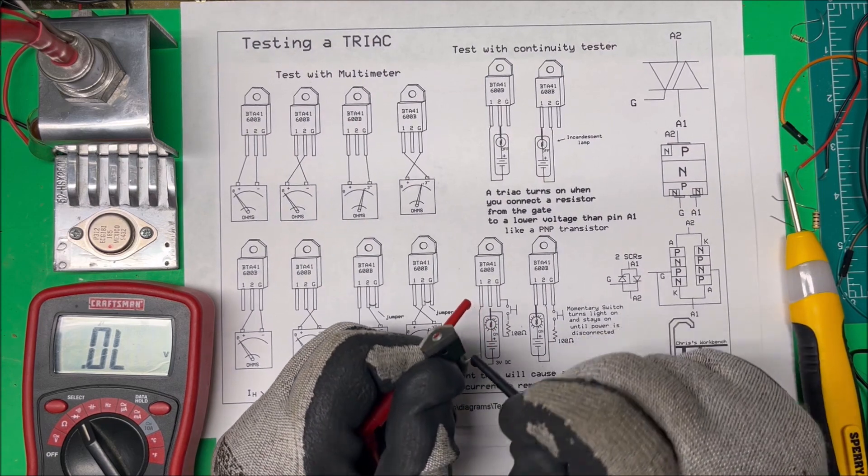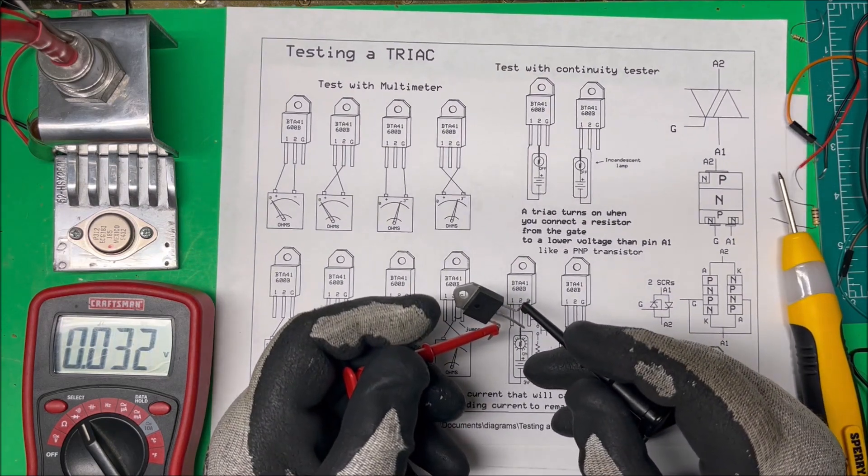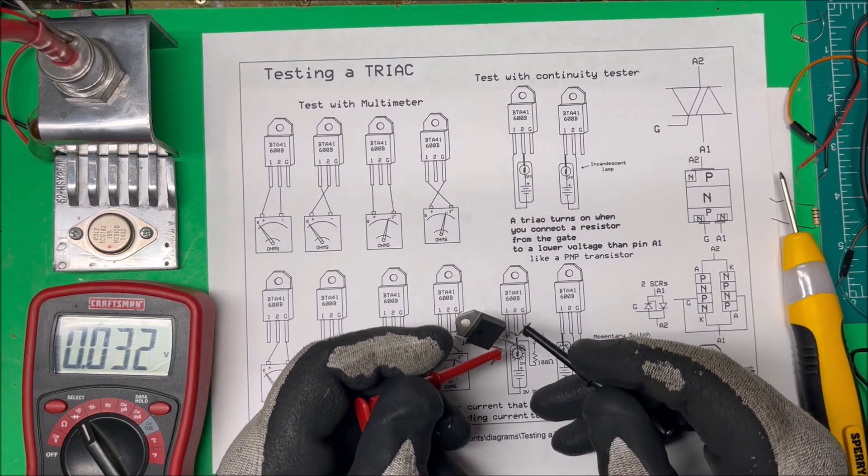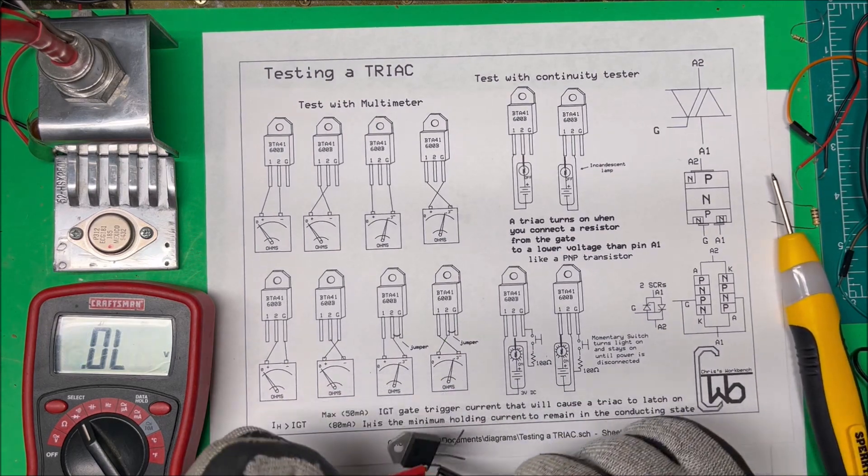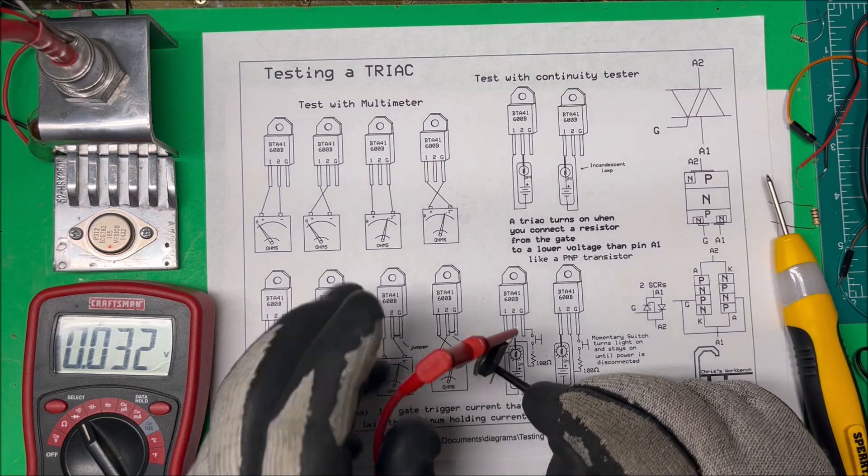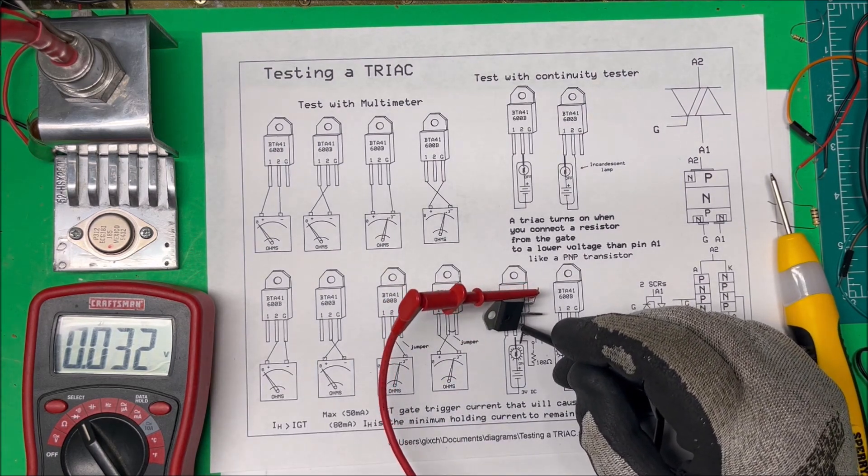There we go, we got 0.023 volts on there. That's good. And then if we reverse that, we get the same thing: 0.023 volts and 0.032 volts.